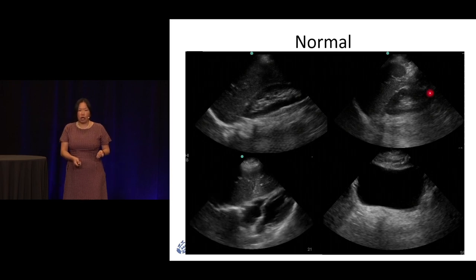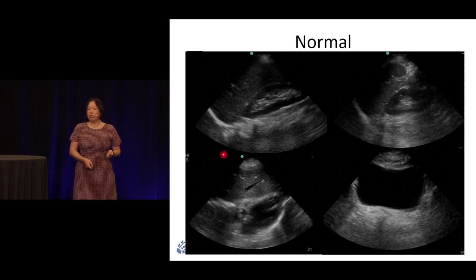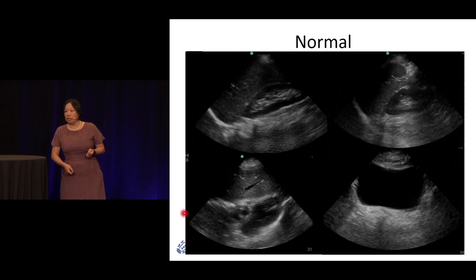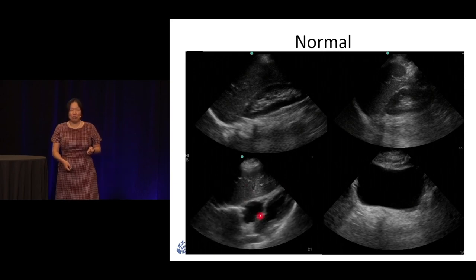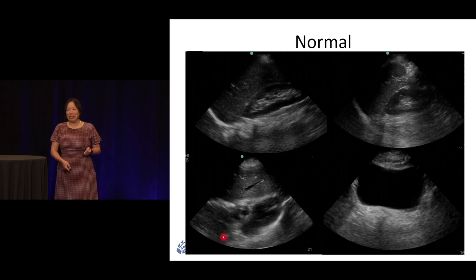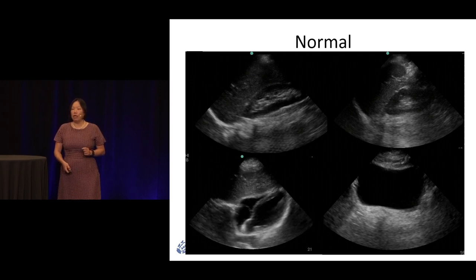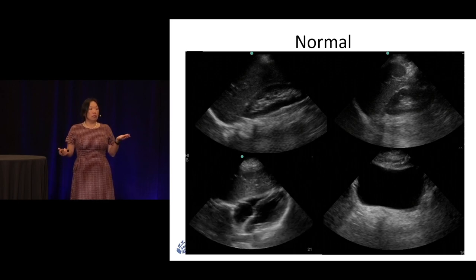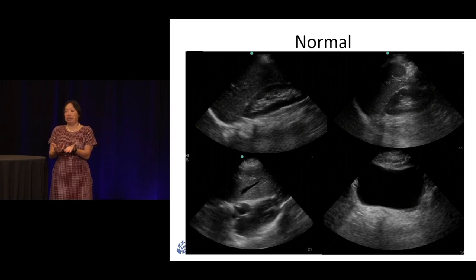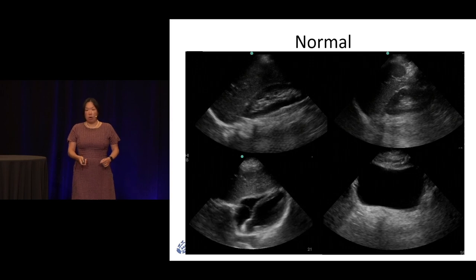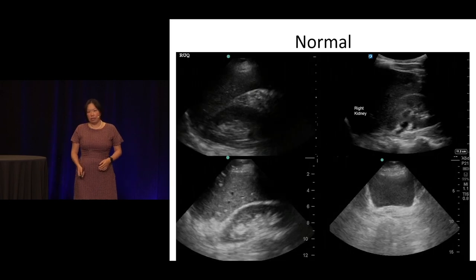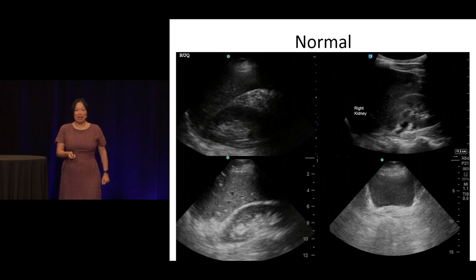The fourth view inside your FAST exam is to look around the heart. You know it's the heart because it's beating — very few things move this way inside your body. For the heart, you want to know if there's free fluid. Where does free fluid around the heart collect? The pericardium — it's a sac that contains the heart. And then here's your bladder down below.